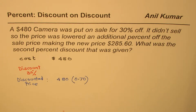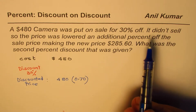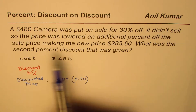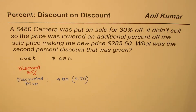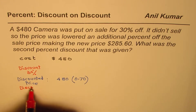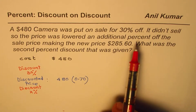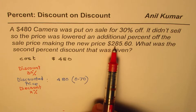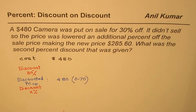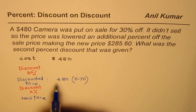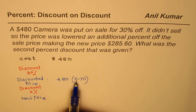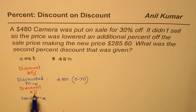Now let's further read: it didn't sell, so the price was lowered an additional percent of the sale price. So now again we have a discount. Let's say that discount is X percent. The new price is $285.60. So the new price after this discount of X percent on the existing price of 480 times 0.70 needs to be set up.